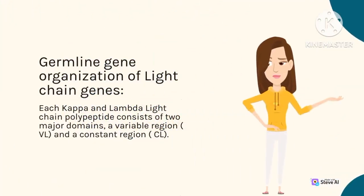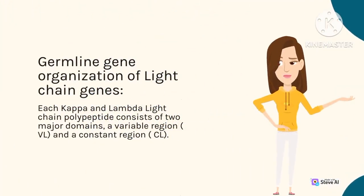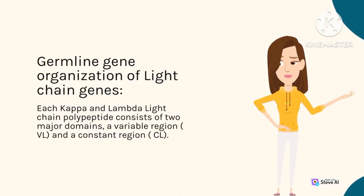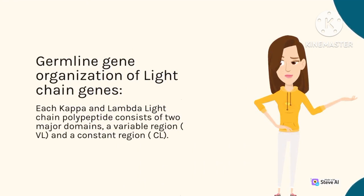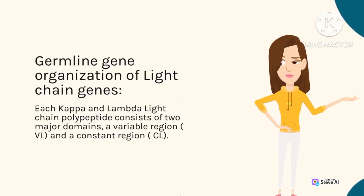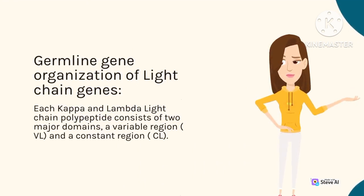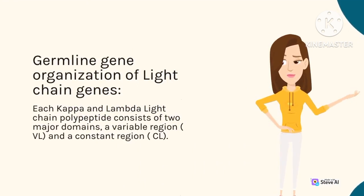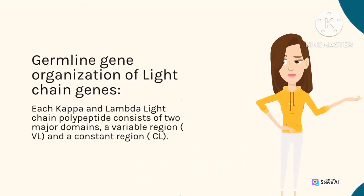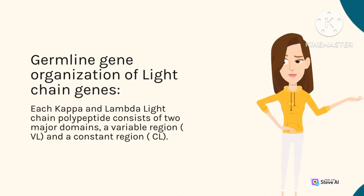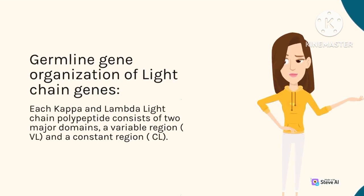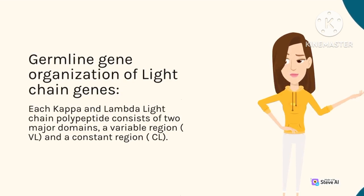Germline gene organization of light-chain genes: Each kappa and lambda light-chain polypeptide consists of two major domains — a variable region (VL) and a constant region (CL).